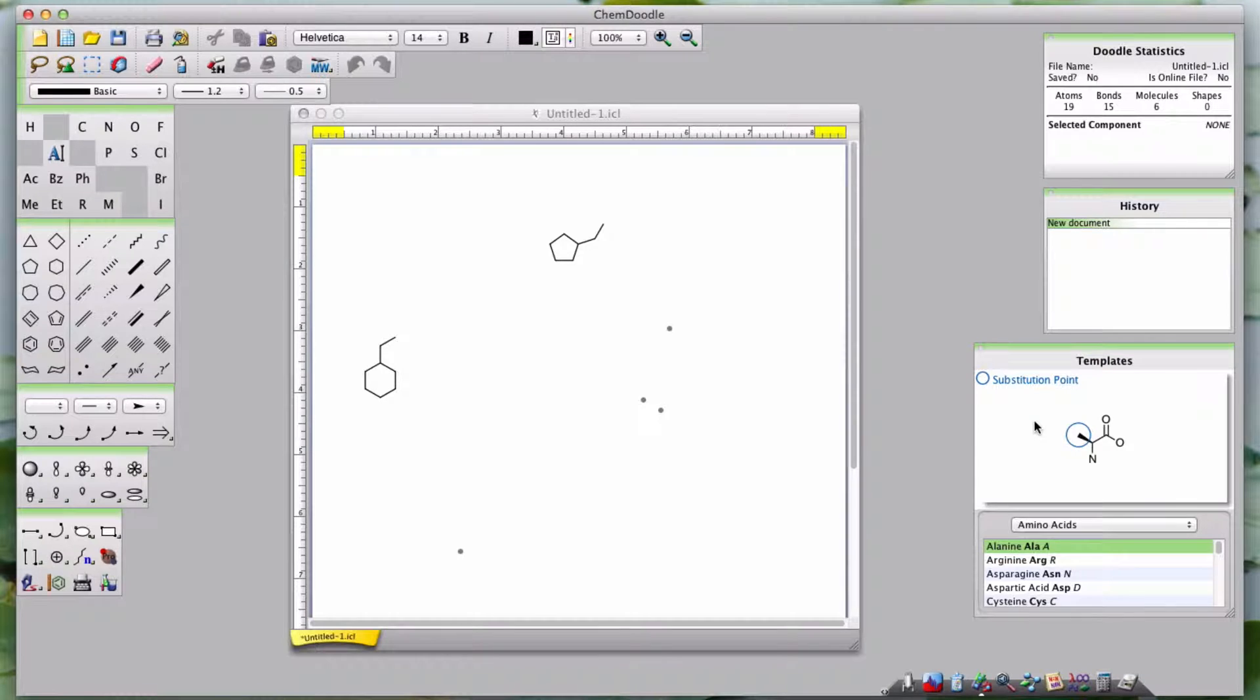At the top of the Template Widget is the Main Structure Panel. The Main Structure Panel displays the currently selected template. In the top left corner, a blue circle with the words Substitution Point indicates that whatever atom the blue circle appears on is the Substitution Point.